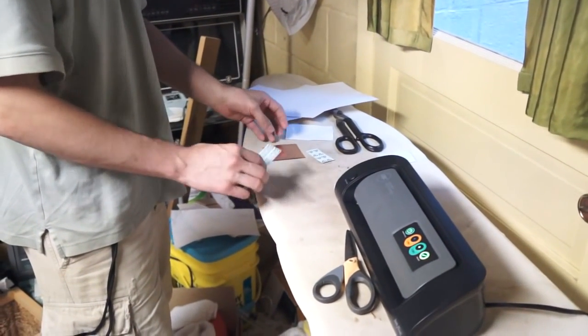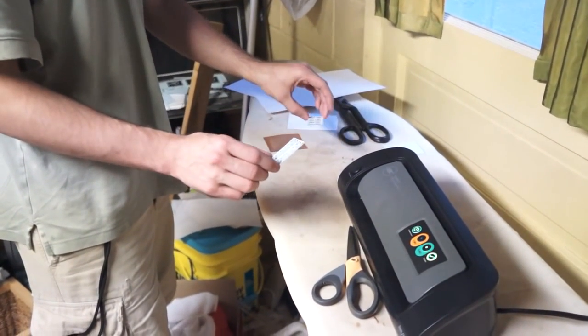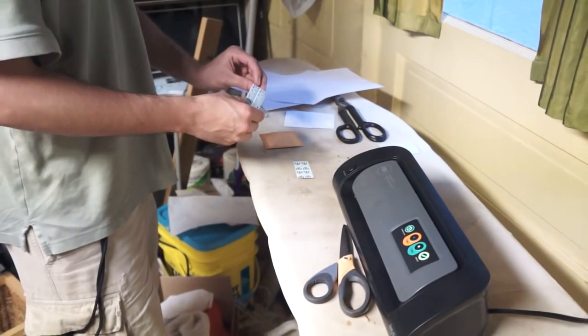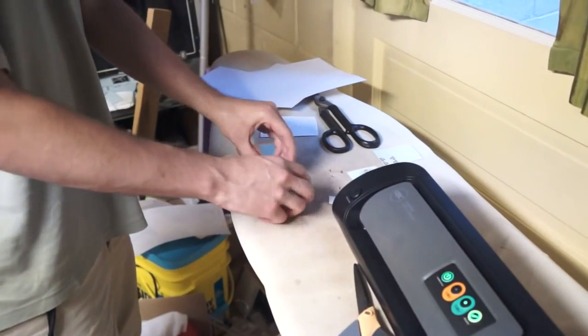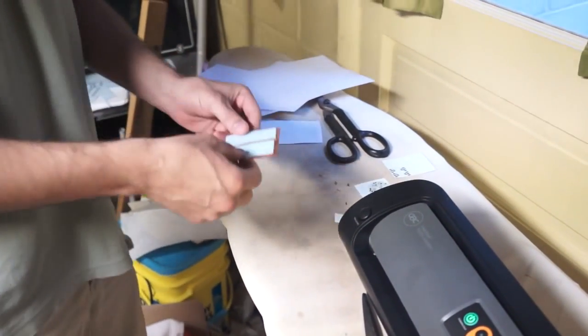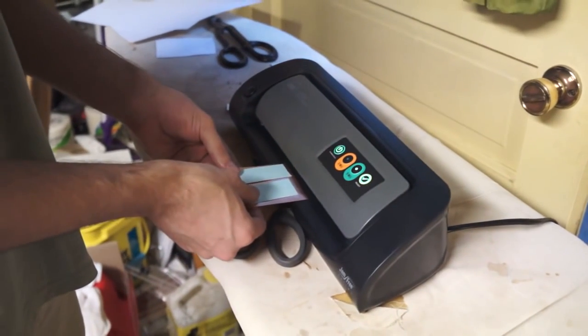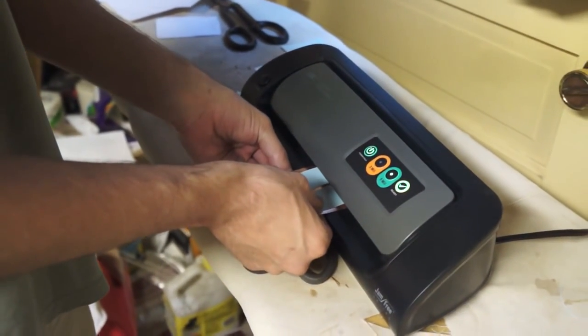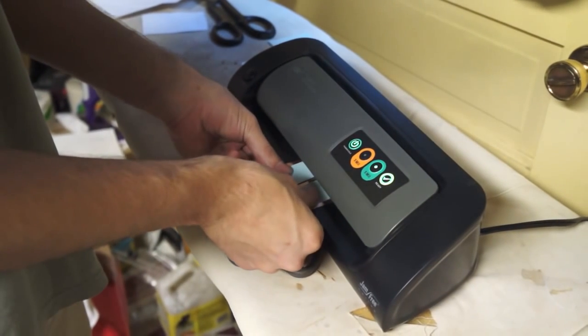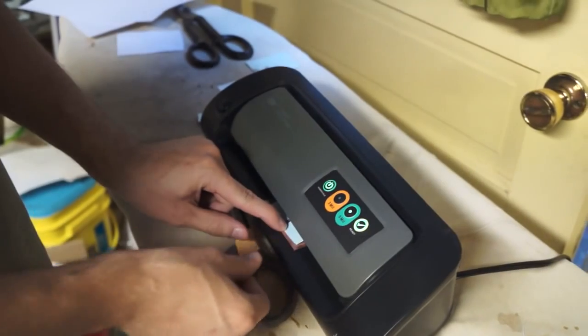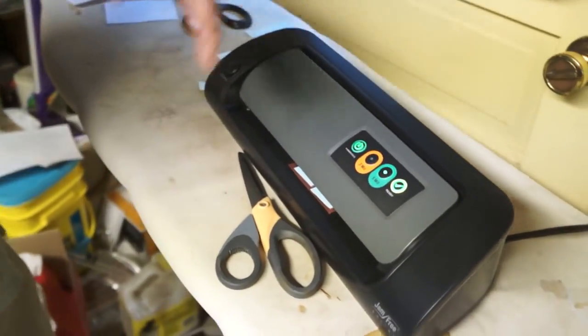So we have this nice shiny sheet here. And we have the toner transfer stuff printed out. Remember, these are all flipped left for right. And all we have to do is just place them face down on the copper. And we can just start running it through. Positioning doesn't really matter as long as it's got a little bit of distance to all the sides.